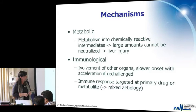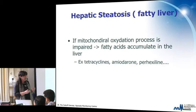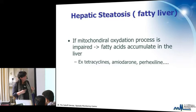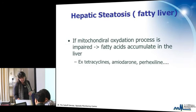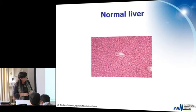Hepatic steatosis is a fatty liver. Oxidative processes in liver mitochondria can be impaired, causing fatty acids that would normally be eliminated to accumulate in the liver. This can be caused by tetracyclines, amiodarone, perhexiline, and other drugs. Under the microscope, normal liver tissue shows regular hepatocytes; when the oxidative pathway is impaired, fat accumulations are visible and can be stained to confirm the diagnosis.